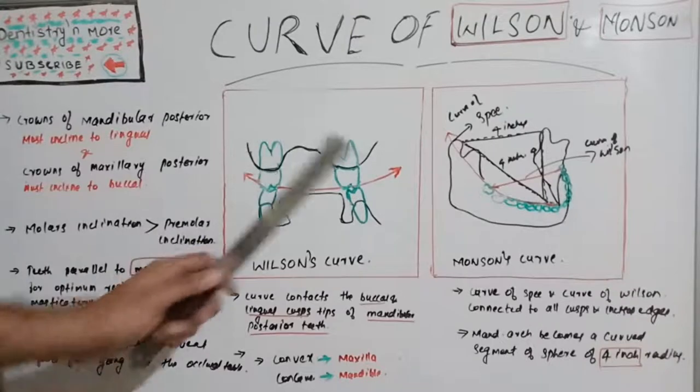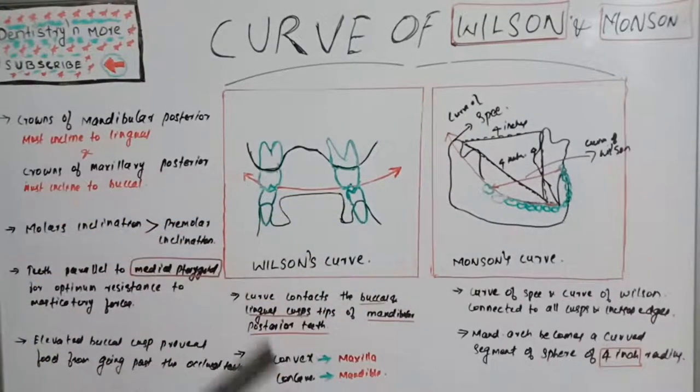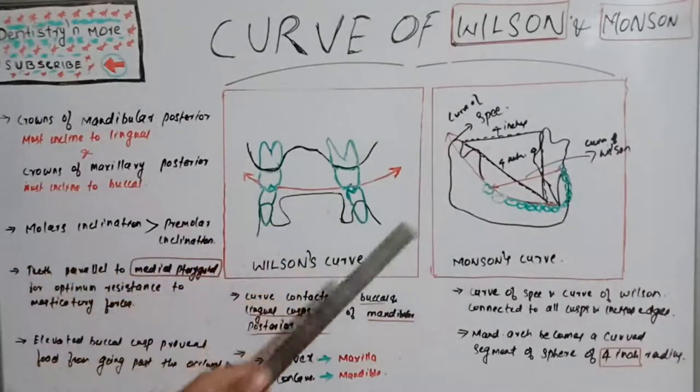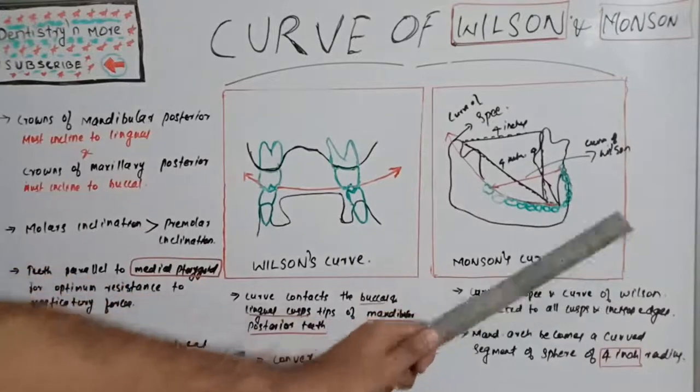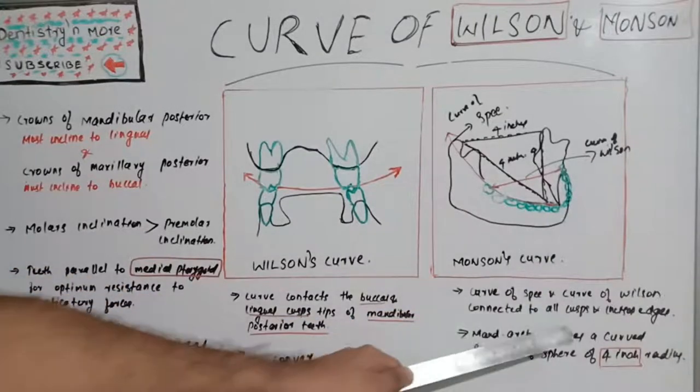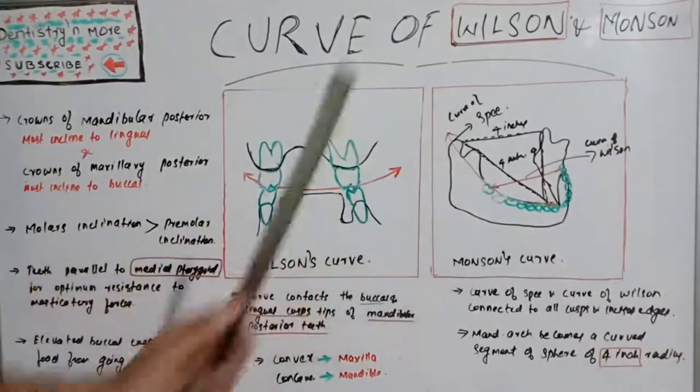Next we have curve of Monson. Monson's curve is nothing but combining curve of Spee and Wilson's curve. When we combine curve of Spee and curve of Wilson by connecting all the cusps and incisal edges, we get Monson's curve.